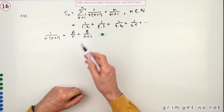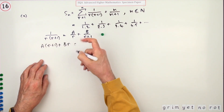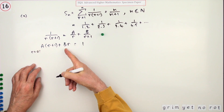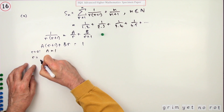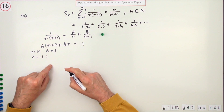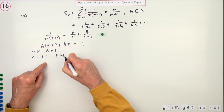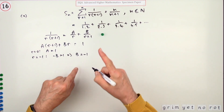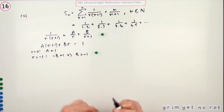Multiplying through by r(r+1) gives A(r+1) + Br = 1. Substituting r = 0: A = 1. Substituting r = −1: −B = 1, so B = −1. You're going to have negative terms, and getting those two values of A and B was worth a mark.